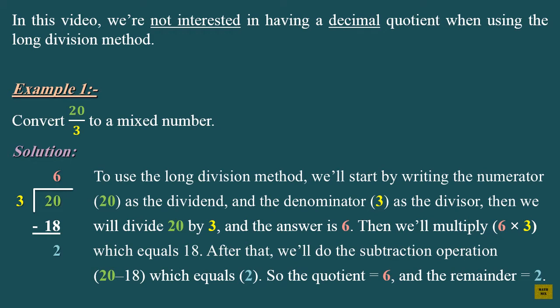After that, we'll do the subtraction operation: 20 minus 18, which equals 2. So the quotient equals 6, and the remainder equals 2.